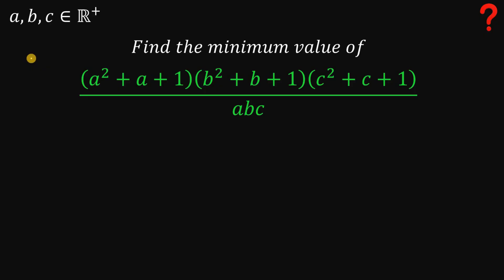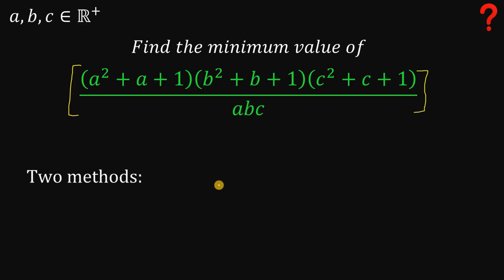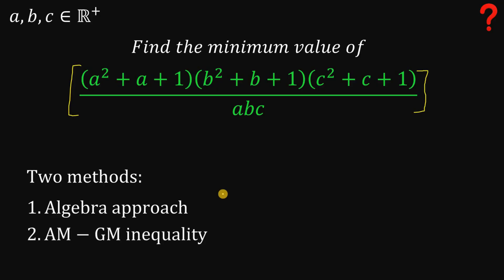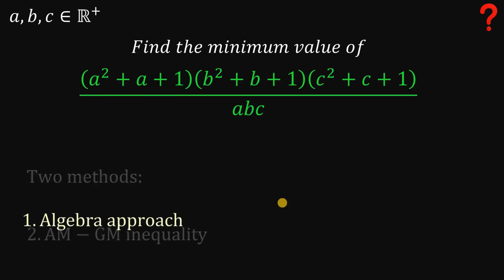All right. So for some positive numbers A, B, C, the goal is to find the minimum possible value of the expression (A squared plus A plus 1) times (B squared plus B plus 1) times (C squared plus C plus 1), all over A times B times C. I will show you two different methods: the algebra approach, and the AM-GM inequality, which is a very straightforward technique for this kind of question.